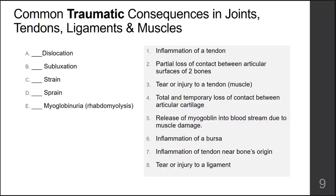Our first example is dislocation — a total or complete and temporary loss of contact between the articular cartilage of one joint to another. This is common in joints such as the shoulder, elbow, wrist, hip, and knee. With dislocation, because the joint is separating as much as it is, it can really damage soft tissues in the area that are not supposed to be stretched and moved in that way.